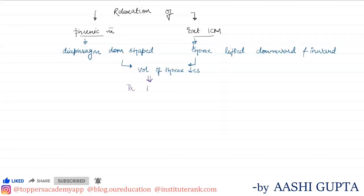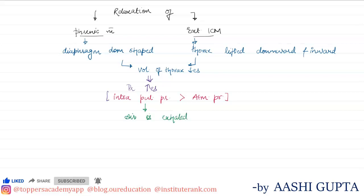The pressure inside the lungs increases — the pulmonary pressure increases. The intrapulmonary pressure becomes more than the atmospheric pressure. As a result, the air goes out and we can say that the air is exhaled, which leads to expiration.